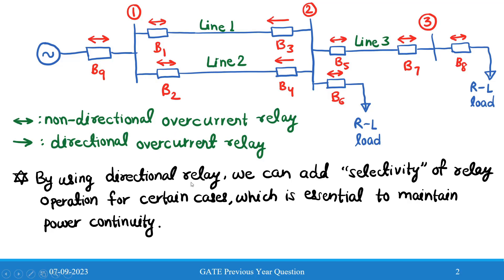Directional relays are needed to add selectivity for relay operation, such that we can maintain power continuity in the rest of the lines. By adding directional overcurrent relays, we provide selectivity for relay operation, which is essential to maintain power continuity.